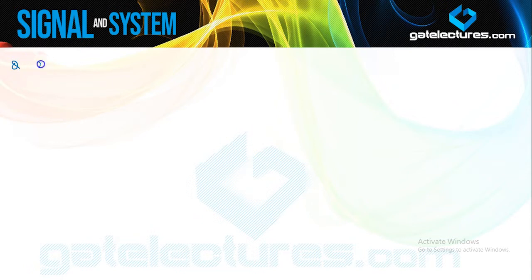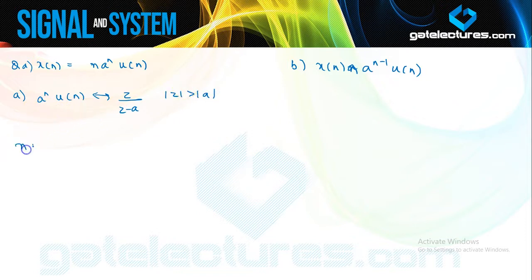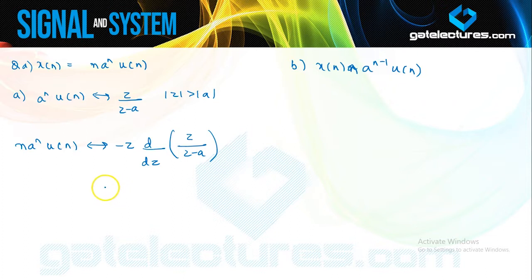The next question asks to find the Z-transform of n·a^n·u(n) and n·a^{n−1}·u(n). We know the Z-transform of a^n·u(n) is z/(z−a) with ROC |z|>|a|. Using the multiplication-by-n property, the Z-transform of n·a^n·u(n) is −z·d/dz[z/(z−a)] = az/(z−a)², with ROC |z|>|a| unchanged.